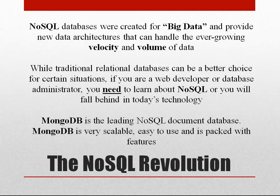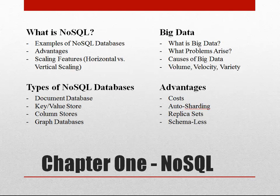MongoDB is the leading NoSQL document database. There are four types of NoSQL databases which we'll get into in a bit. MongoDB is very scalable and has a lot of different features that we'll go over in this course. There will be five chapters, and in each chapter there are four to six sections, each including at least one video and the program files for that section.